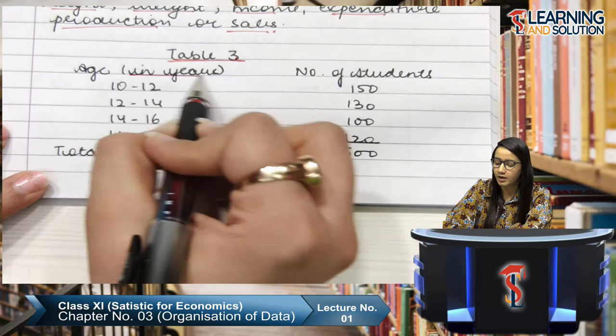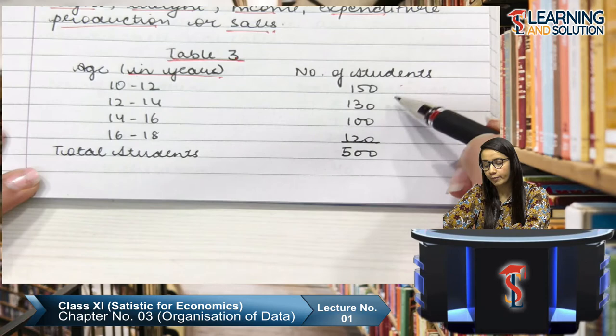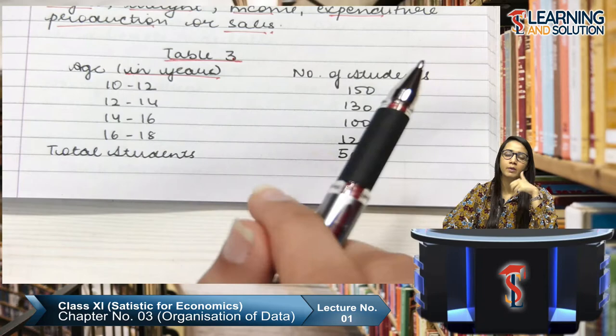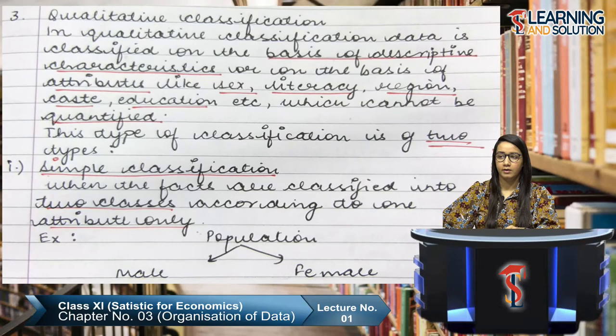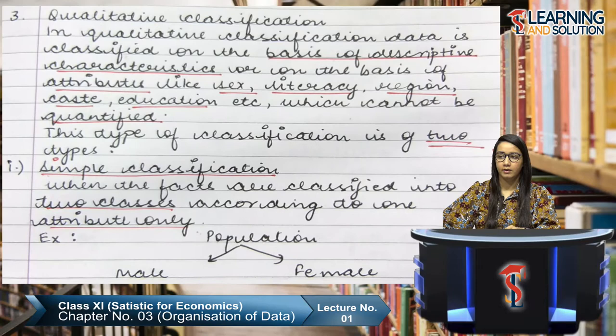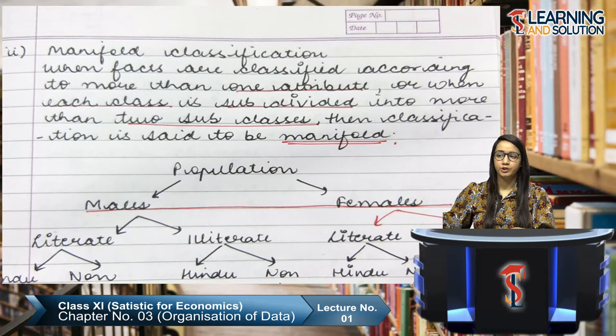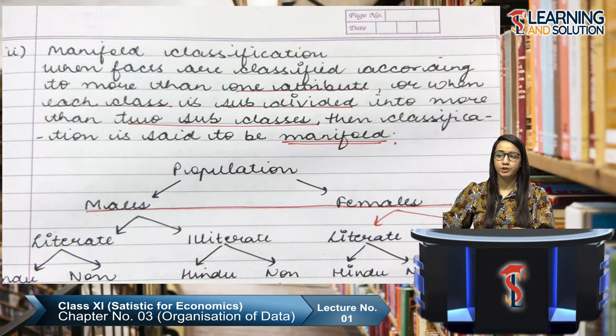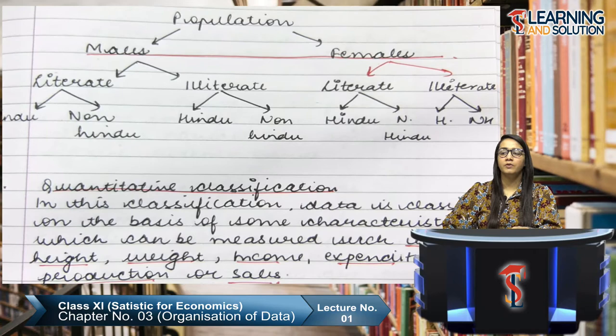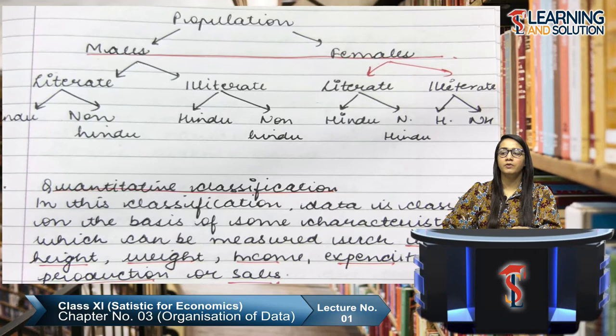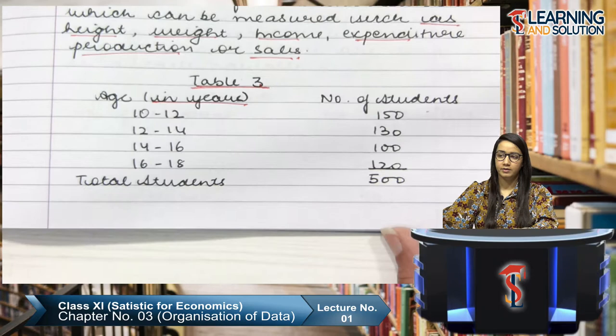Table 3 shows quantitative classification — age in years divided into brackets 10–12, 12–14, 14–16, 16–18, and the number of students falling in each age bracket. Since we can measure these values, it is quantitative classification. To summarize: we have covered geographical, chronological, qualitative (simple and manifold), and quantitative classification.